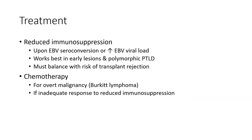Treatment includes reduced immunosuppression upon Epstein-Barr virus seroconversion or increased EBV viral load. For early lesions and polymorphic PTLD, this must be balanced with the risk of transplant rejection. Chemotherapy is used for overt malignancy or inadequate response to reduced immunosuppression.